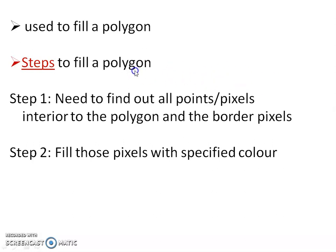To fill this polygon, there are two steps. In the first step, we need to find out all the points or pixels interior to the polygon and the border pixels also. In the second step, after finding out these points, you have to fill those pixels with a specified color.